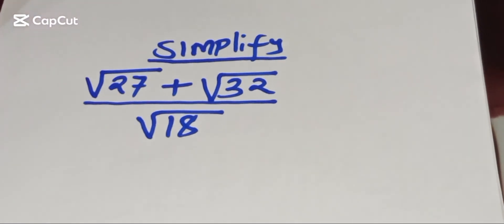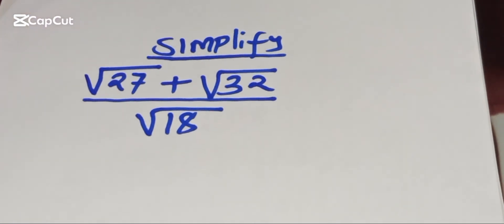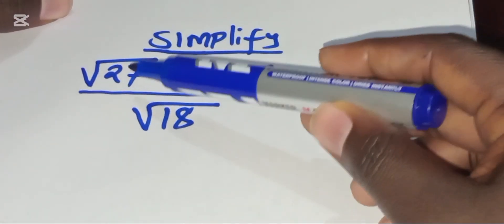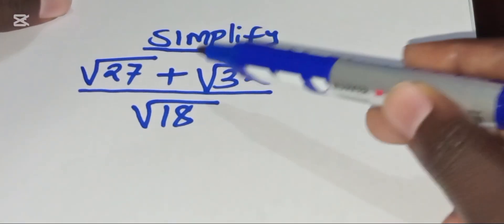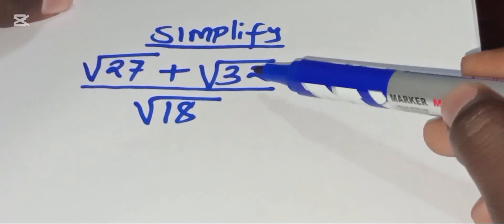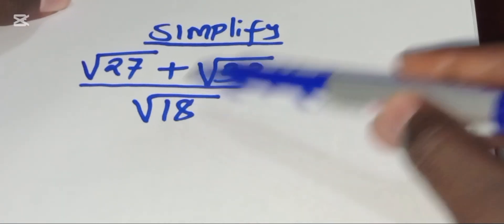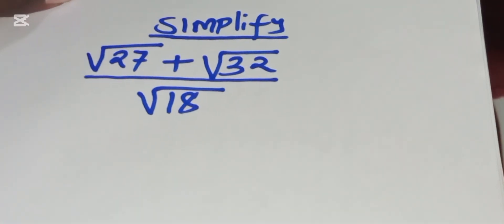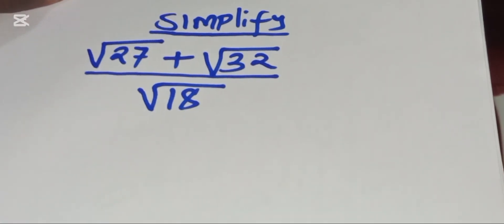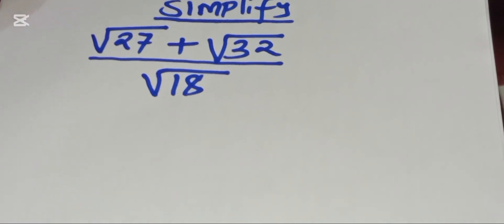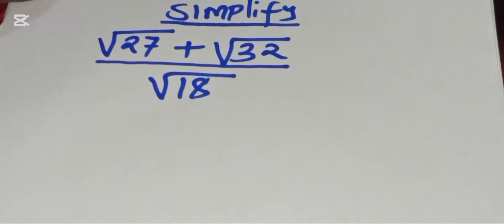Hello everyone, let's simplify this radical expression, which is the square root of 27 plus the square root of 32 divided by the square root of 18. So how do we go about this? The first thing is to rewrite the terms.